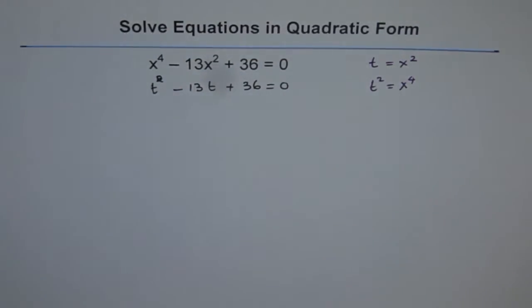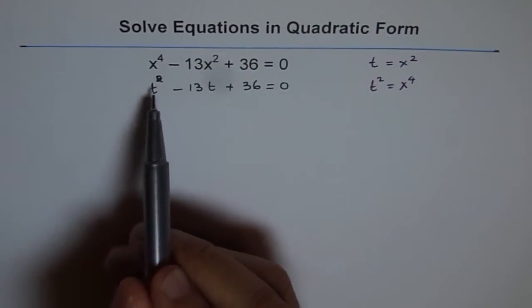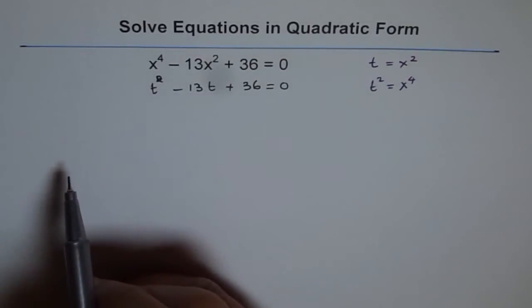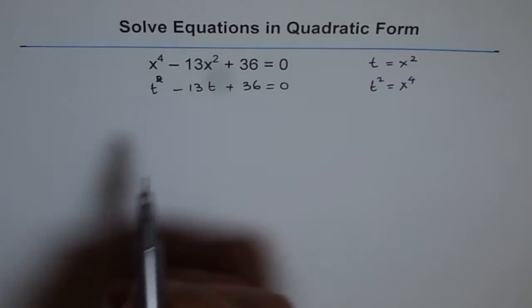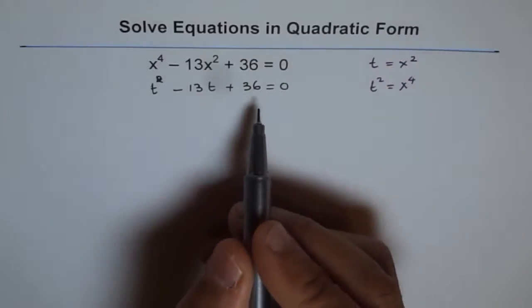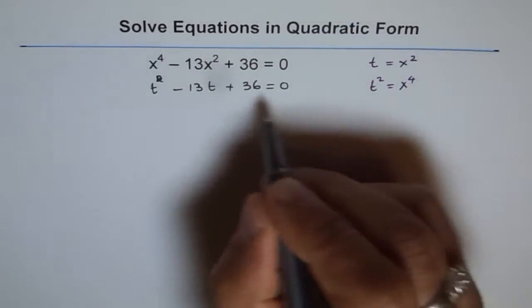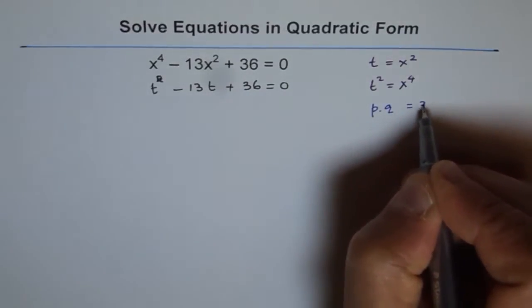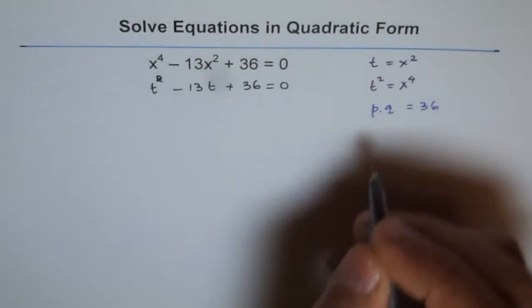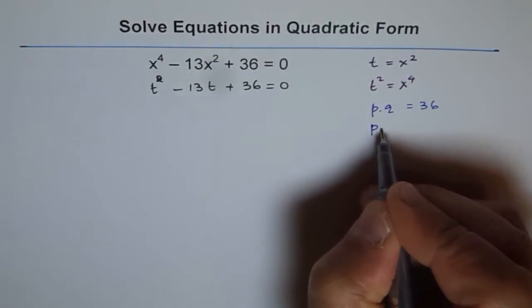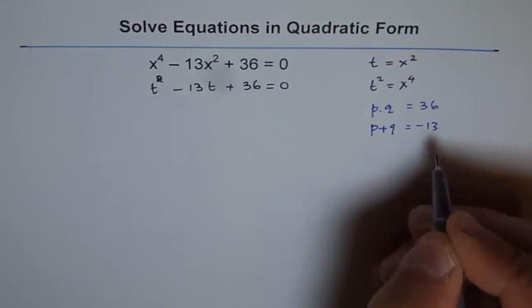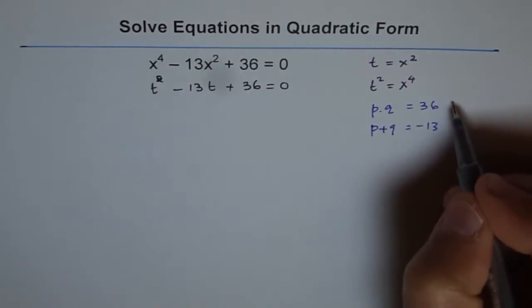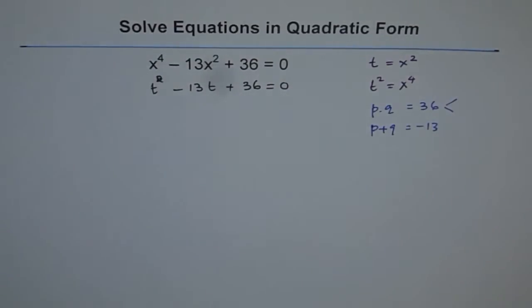Now since this is a quadratic equation we can factor it with the rules which we have learned. Coefficient of t squared is 1 so factoring will use product and sum. Product of two numbers equals 36 and sum is minus 13. If we add them we should get minus 13. So what could be these numbers? That's what we need to figure out.